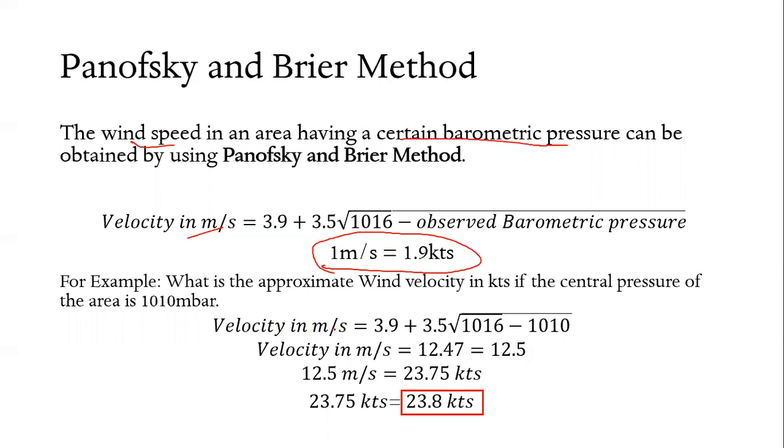Let's test the formula. Having the example of approximate wind velocity, we will find the approximate wind velocity in knots with the given central pressure of 1010 millibars.